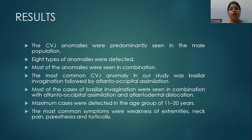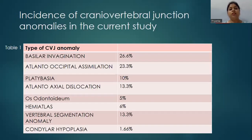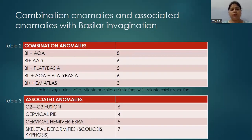The most common CVJ anomaly in our study was basilar invagination, followed by atlantooccipital assimilation. Most cases of basilar invagination were seen in combination with atlantooccipital assimilation and atlantodental dislocation. Maximum cases were detected in the age group of 11–20 years. The most common symptoms were weakness of extremities, neck pain, paresthesia, and torticollis. This table shows the incidence of craniovertebral junction anomalies: maximum is basilar invagination at 26.6%, followed by atlantooccipital assimilation at 23.3%, with the least cases being condylar hypoplasia at 1.6%.